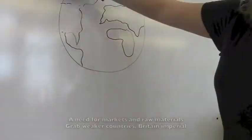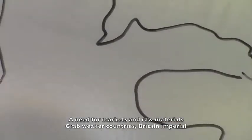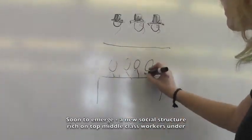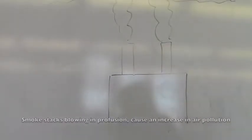A period of world evolution. The need for markets and raw materials makes Britain grab weaker countries. Imperialism emerges. A new social structure: rich on top, middle class, workers under smokestacks. Pollution blows in profusion, causing an increase in air pollution.